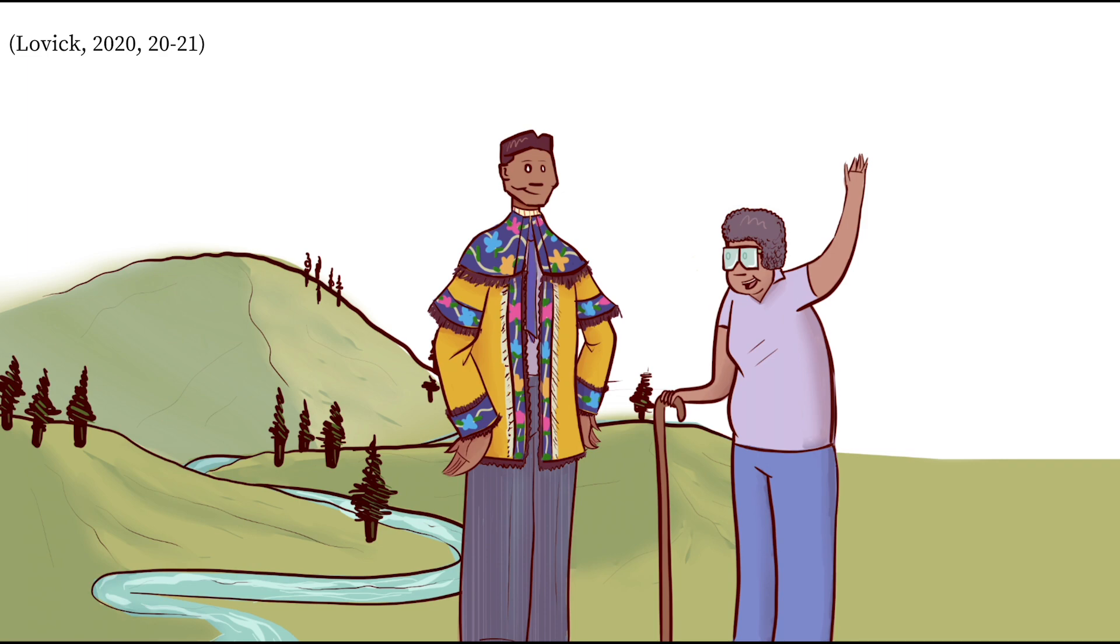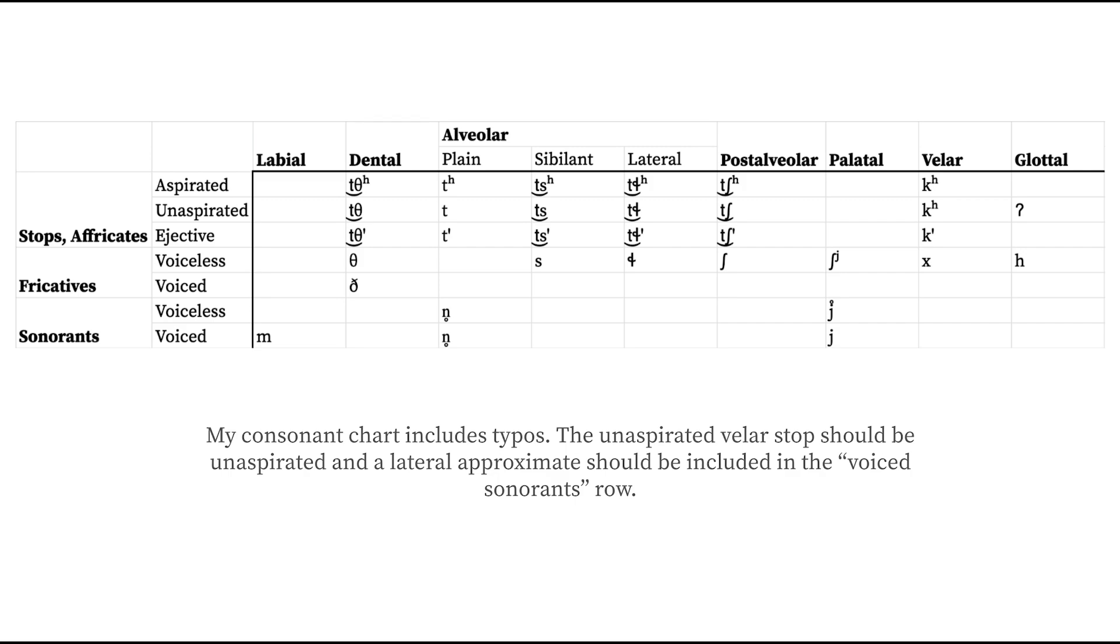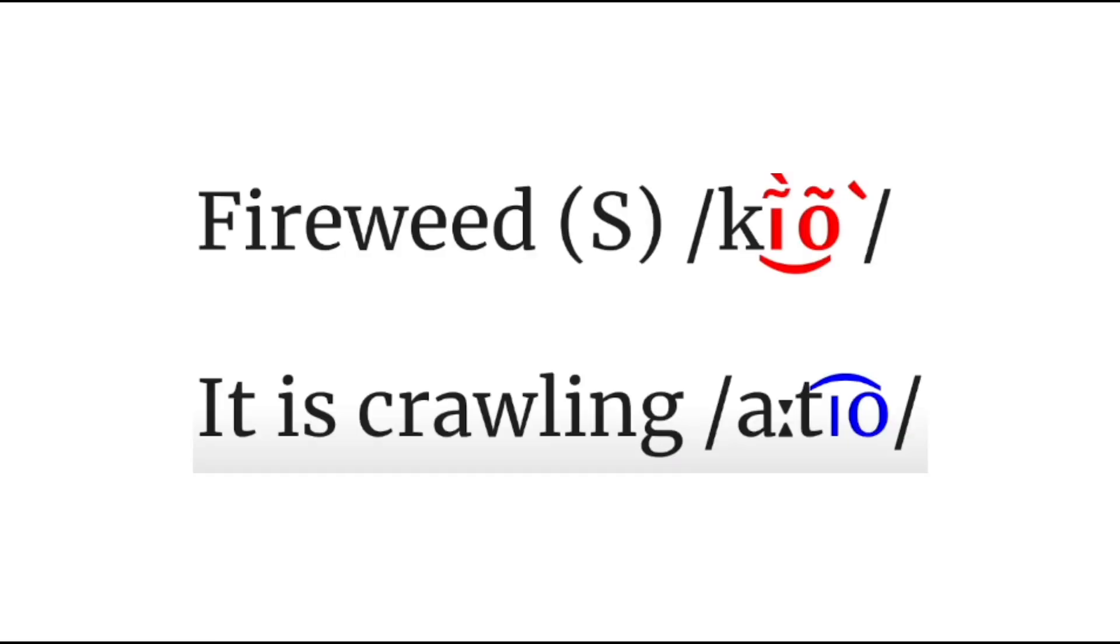Upper Tanana is an Alaskan Dine language with no more than 50 fluent speakers. As discussed last time, the language has 59 phonemes, or 85 or more when you remember all those stacking tonal, length, and nasal contrasts.